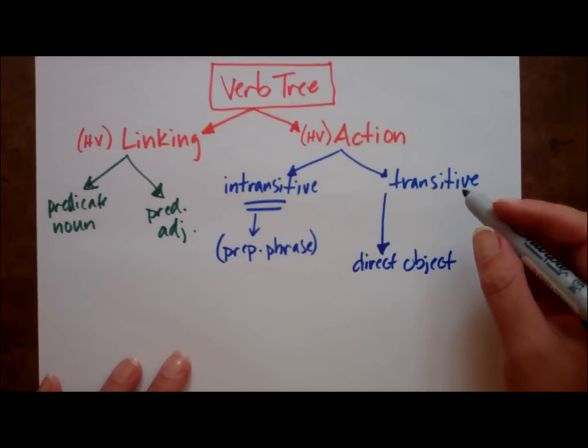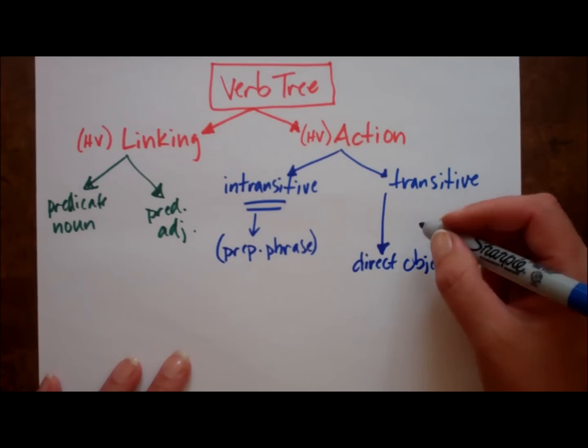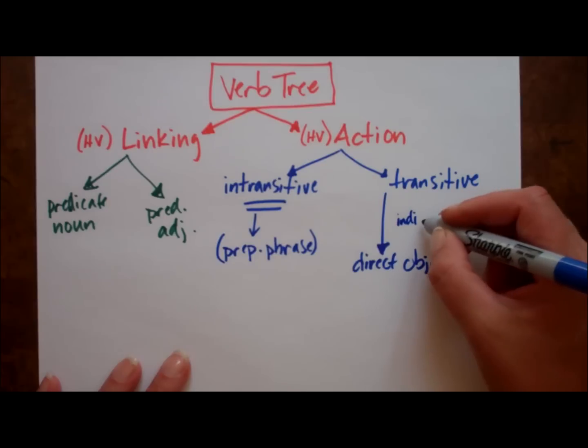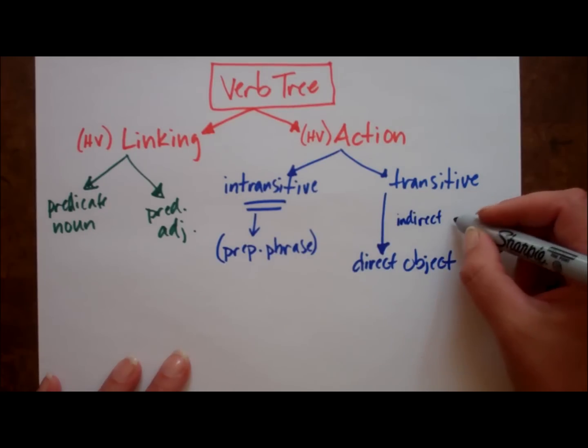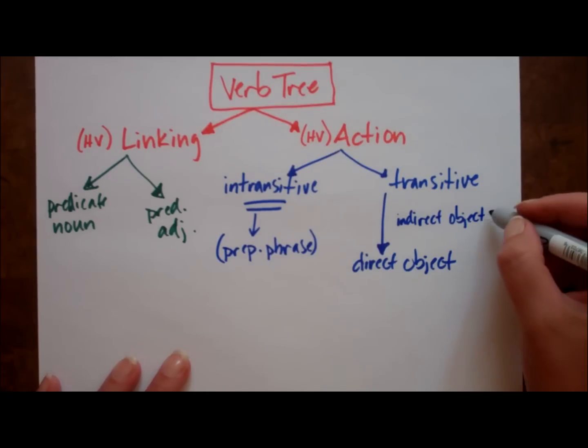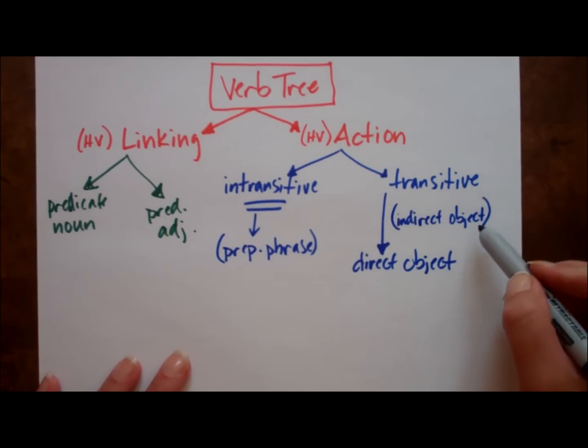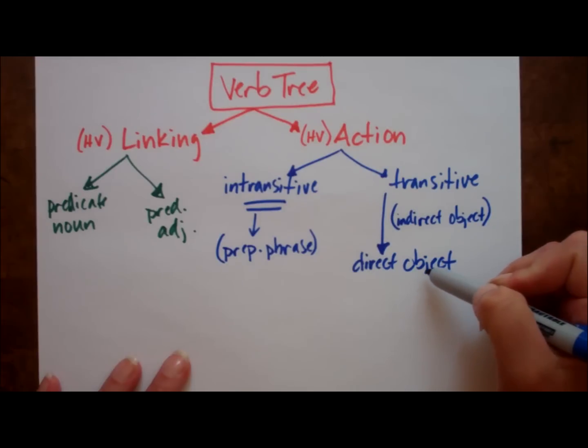If there's a direct object, it may be preceded by an indirect object. Not all sentences that have transitive verbs have indirect objects. So we'll put that in parentheses as well. If the indirect object is there, however, it's after the transitive verb, but before the direct object.